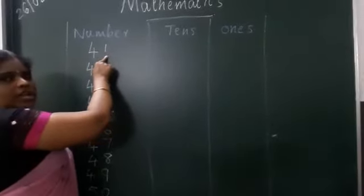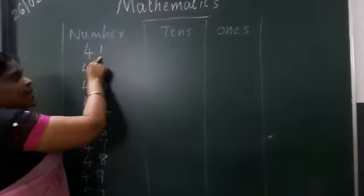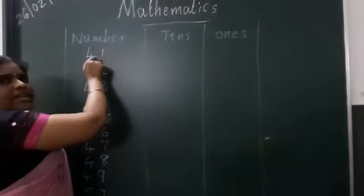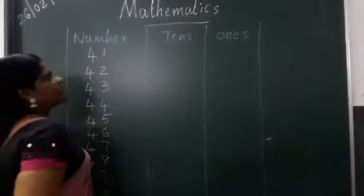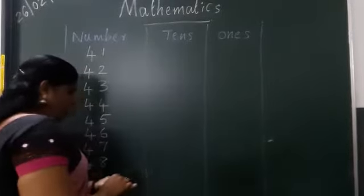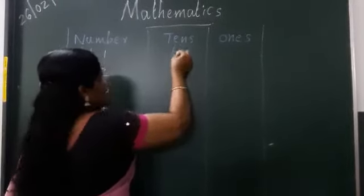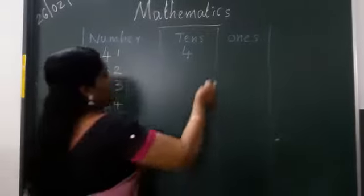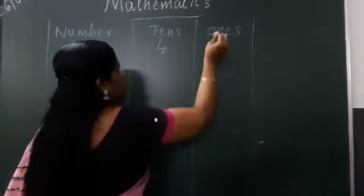4, 1, 41. In this number, how many tens are there? Yes, 4 tens are there. And how many ones are there? 1 one.